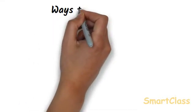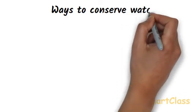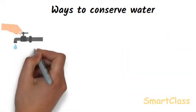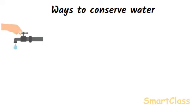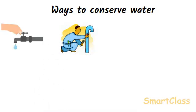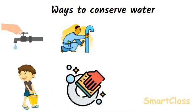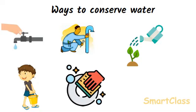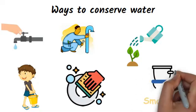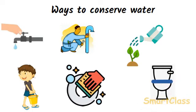Let us now see the various ways to conserve water or minimize its wastage at home. Firstly, turn off the tap immediately after use. Get leaking taps repaired immediately. Take a bath by filling water in a bucket and not directly under a flowing tap. Wash utensils by filling water in a basin and not under running tap water. Use the water from washing rice, vegetables or fruits for watering plants at home. Do not use a full flush from the cistern in the toilet when a half flush is sufficient. Always remember — water is precious, every drop counts.